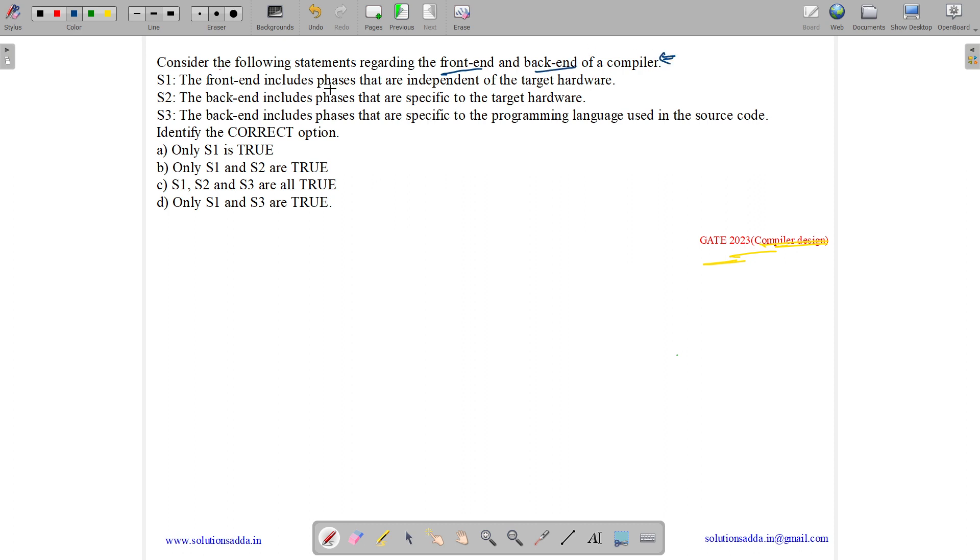S1: The front-end includes phases that are independent of target hardware. S2: The back-end includes phases that are specific to a target hardware. S3: The back-end includes phases that are specific to a programming language used in source code. Identify the correct option. Only S1 and S2 are true. S1, S2, S3 are all true. Only S1 and S3 are true.